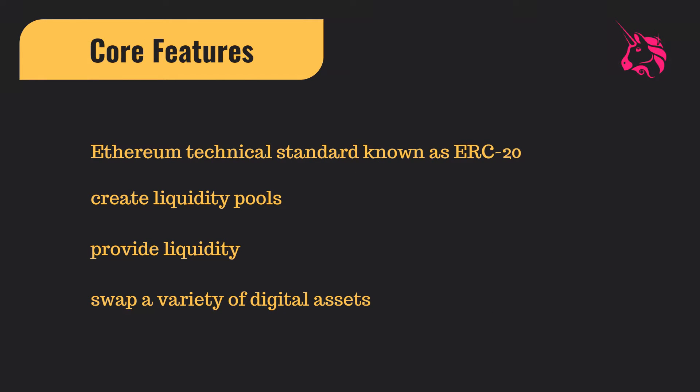Now let's talk about Uniswap smart contract features. You can trade any ERC-20 token, as long as the token follows the Ethereum technical standard. This contract is deployed on the Ethereum blockchain so you have to follow the ERC-20 standard. You can also easily provide and create liquidity pools so others can buy your token and swap. You can create multiple swaps, hold multiple ERC-20 assets, and do transactions between them.